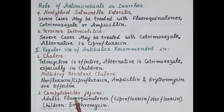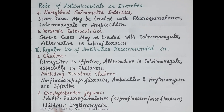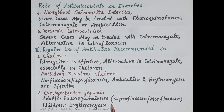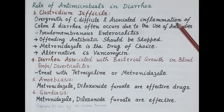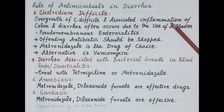Diarrhea caused by Campylobacter jejuni: in adults, it is treated with fluoroquinolones like ciprofloxacin and norfloxacin. In children, diarrhea caused by Campylobacter jejuni is treated with erythromycin.